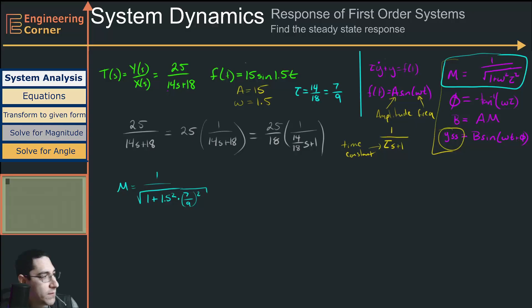On our calculator, there's a couple of things we want to keep in mind. When we're dealing with this next term, this tangent term, we do want to make sure that we're in radians. So I'll just take care of that now while it's on the top of my mind. And now I'm going to put this in. So 1.5 squared times 7 over 9 squared plus 1. I want the square root of that, and I want to divide this by 1. So this is equal to 0.651.